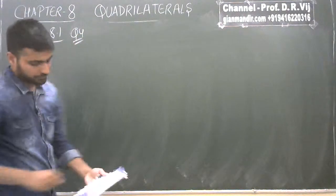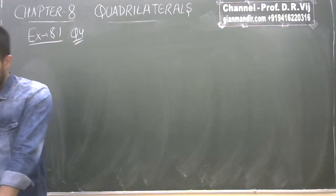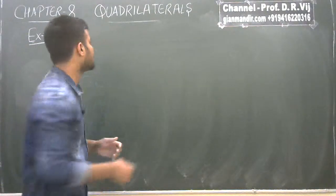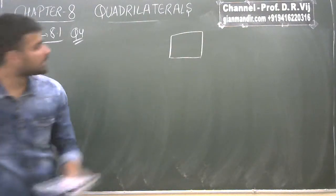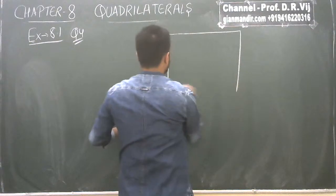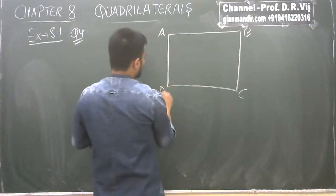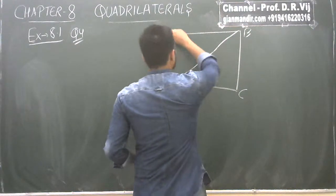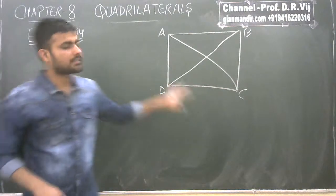Let's move on to question number four. Question number four says: show that the diagonals of a square are equal and bisect each other at 90 degrees. We have to prove that diagonals are equal as well as bisect each other at 90 degrees. ABCD is a square. This will be a lengthy question, so I recommend you note it down with me.